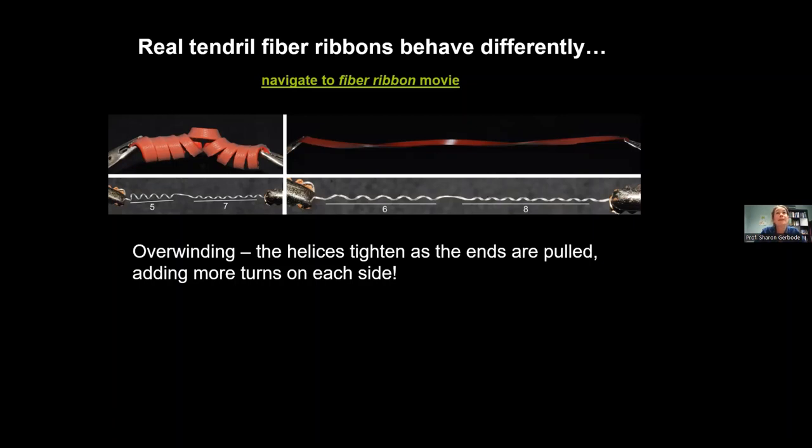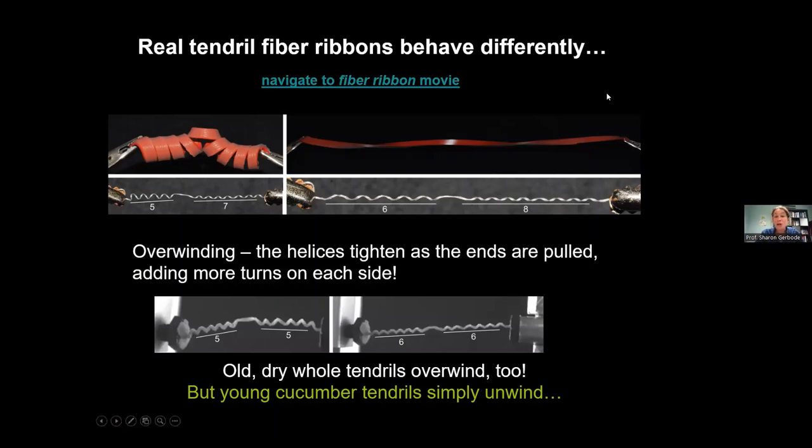Okay, this absolutely flabbergasted me. You pull this thing, you know how it was, how it formed that shape. But now when you pull on it, instead of just going back to being flat, it winds up even further. And not only the fiber ribbon from inside, but it turns out that actually as the tendrils age and get harder and more lignified over time, they also start to have this behavior. So this is an image of not just the fiber ribbon from inside, but an entire tendril that when you pull on it, it adds extra turns on the other side as well. But the younger cucumber tendrils, they do just unwind. So what is going on? What causes this?